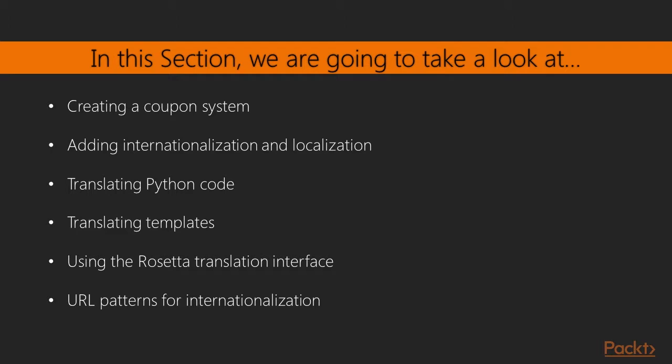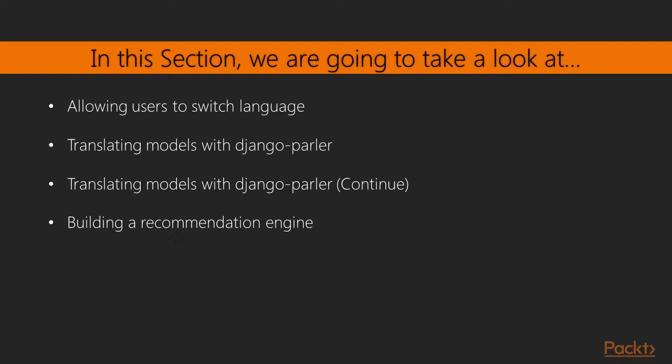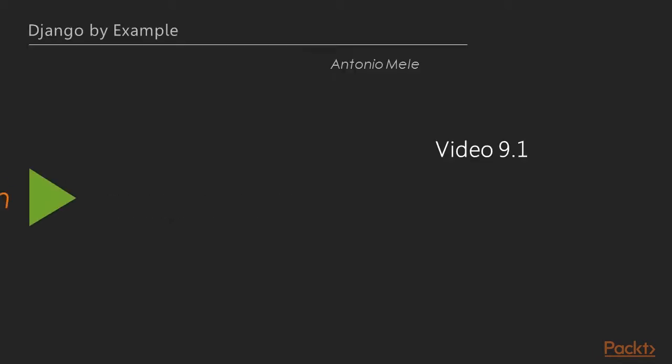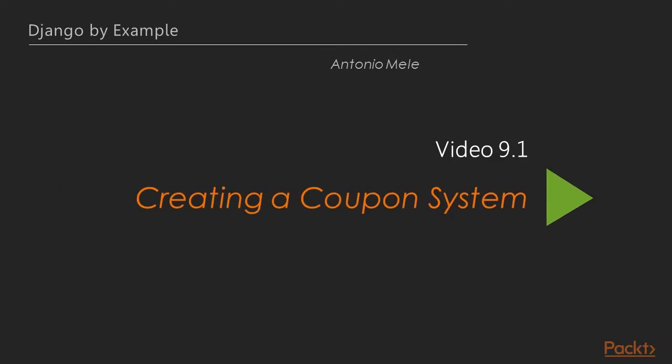We'll also see how to translate Python code and templates. We'll then use Rosetta translation interface and look into URL patterns for internationalization. After this we'll allow users to switch language and translate models with Django Parlour. Now we move on to the first video of this section that deals with how to create a coupon system.